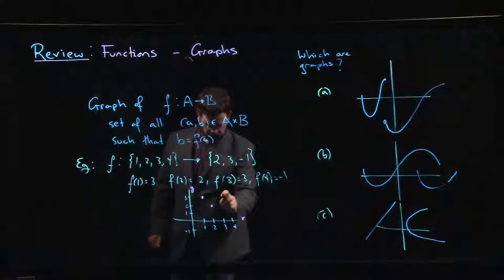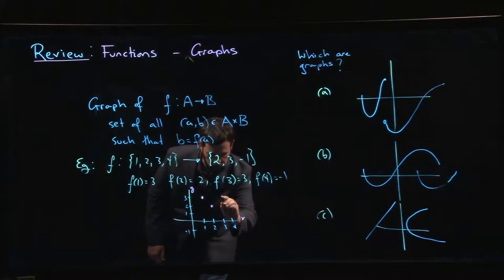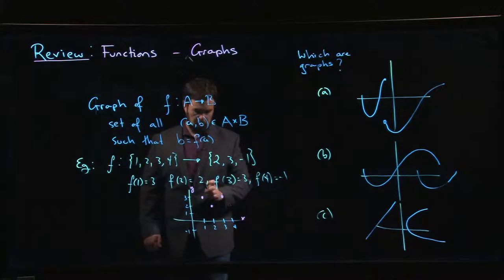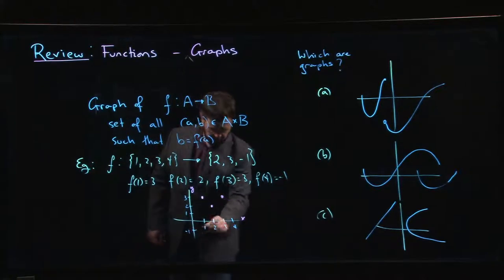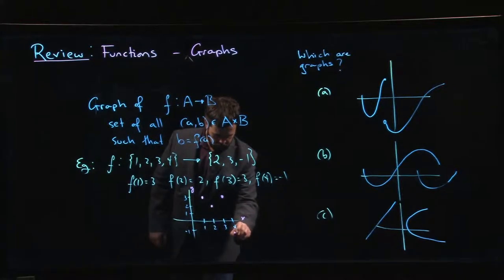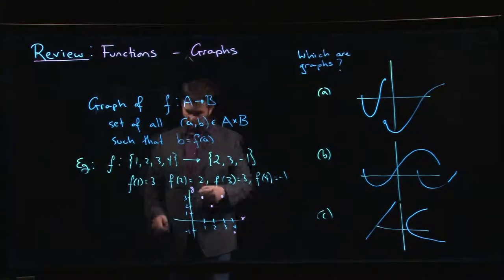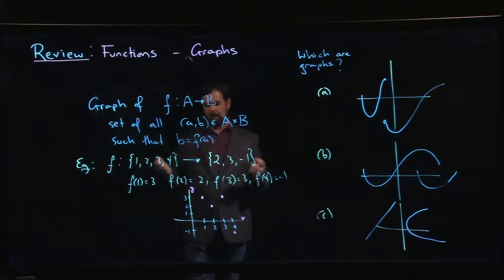So I go back up to 3 for my y-value and I plot a point, and f(4) is equal to -1, so I plot a point down there. And I have my graph. It's not very exciting, but that's the graph, and this is indeed the graph of a function.